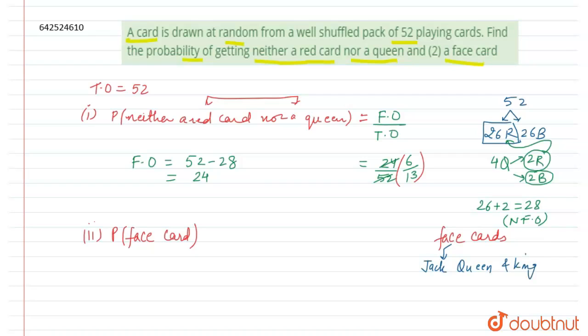We know that jack are 4 in number, queen is also 4 in number, and king is also 4 in number. That means a total of 12 cards are our favorable outcomes. So the favorable outcome upon total outcome will be equal to 12 upon 52.